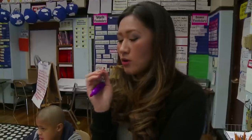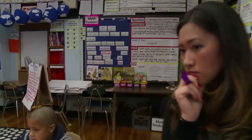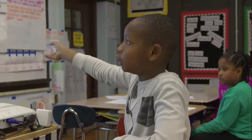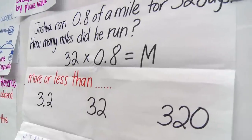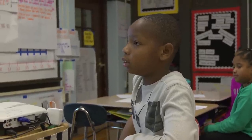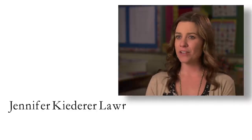It makes sense not only from the point of view of what division means, but it also helps address the mystery of why when you divide a fraction less than 1 by a fraction less than 1, you can get a number bigger than either of those fractions. Similarly, if you do 32 times 8/10, one whole would be 32, but 8/10 is less than 1 whole, so it's going to be less than 32.